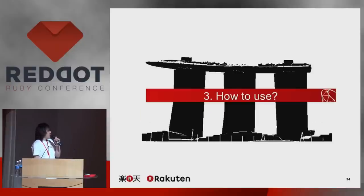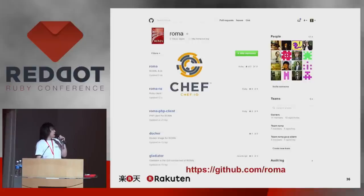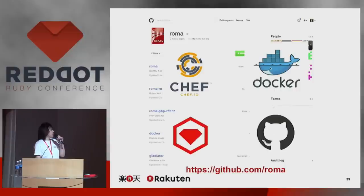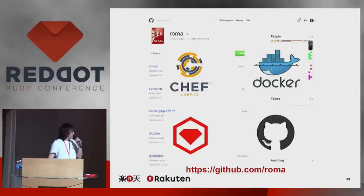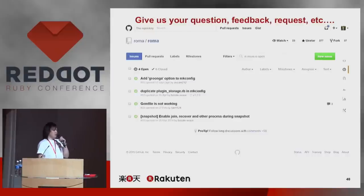The final topic is how to use ROMA. This is our GitHub page. We have prepared several methods to use ROMA, for example Chef, Docker, and RubyGems, and of course you can download it directly via GitHub. If you are using ROMA, please send us your questions, feedback, and requests.